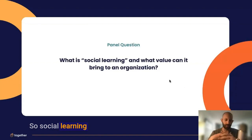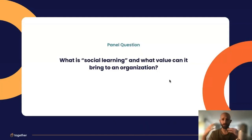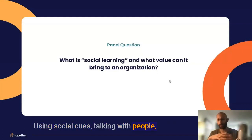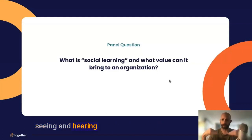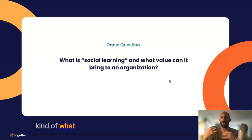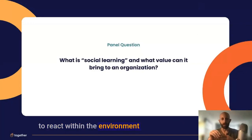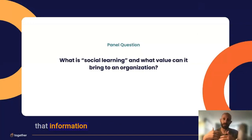So social learning, put simply, is really just people finding their place within their environment, using social cues, talking with people, visually seeing and hearing things. And when we translate that into the workplace, it's all of what happens in an office, on a Zoom meeting — understanding the environment, how to react within the environment, taking that information in, and growing.